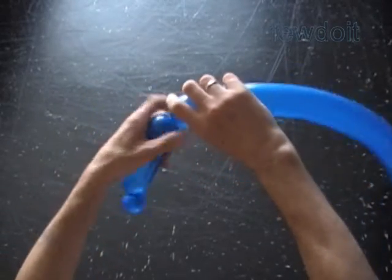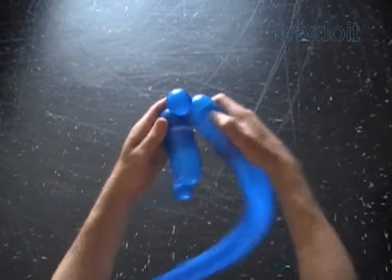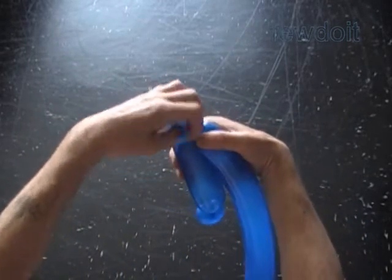Twist the third soft 1 inch bubble. Lock both ends of the third bubble in one lock twist.